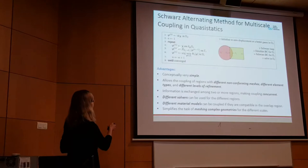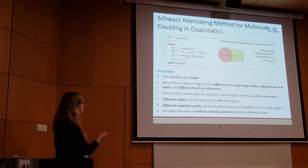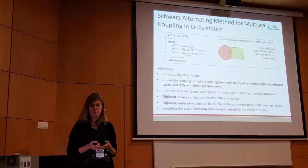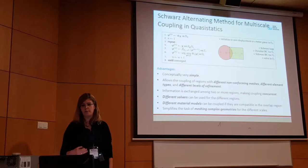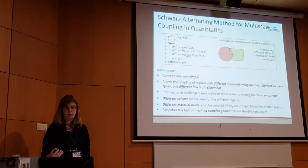This is what we call the Full Schwartz algorithm for the quasi-static case — exactly what I just described, solving in one domain, solving in the other, going back and forth, with information propagating through the boundary conditions. As a multiscale coupling method, this has a number of advantages: it's conceptually simple, it lets you couple regions with non-conformal meshes, different element types, different levels of refinement, different solvers in different subdomains, and even different material models under some conditions. And you do get the concurrent coupling that we're interested in.